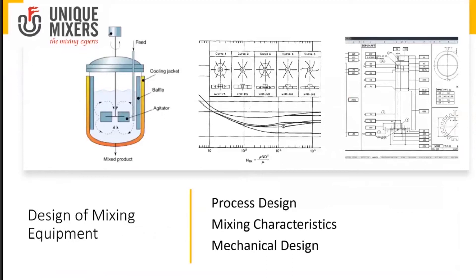Having understood batch and continuous mixing and the criteria for selection of mixing equipment, let's look at what factors are considered in the design of mixing equipment. The design of mixing equipment involves three aspects: process design, mixing characteristics, and mechanical design.